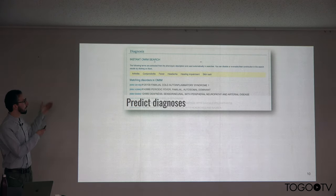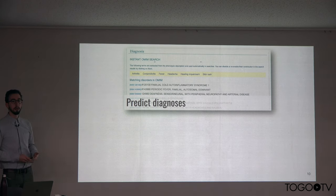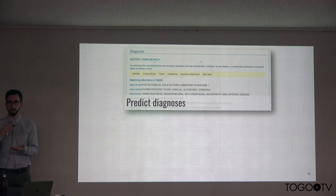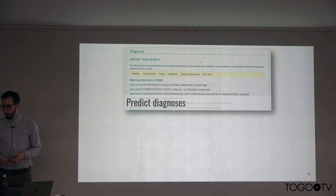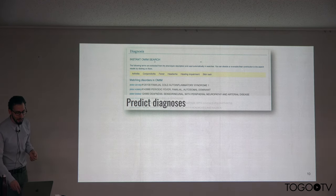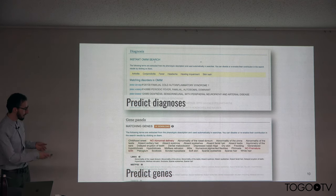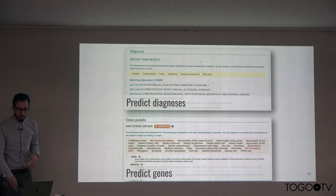Once the clinician or researcher has recorded the patient's phenotype using HPO terms, there are a lot of analyses that we can perform automatically and in real time, such as suggesting diagnoses from OMIM — similar to the approach used by PubCaseFinder — and that is where we are hoping to plug in PubCaseFinder at the Biohackathon — as well as suggesting relevant genes known to be associated with the patient's symptoms.